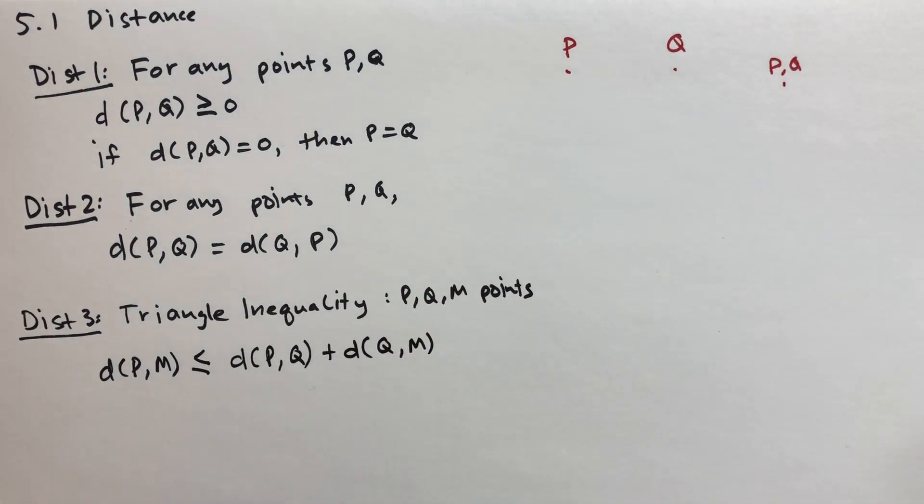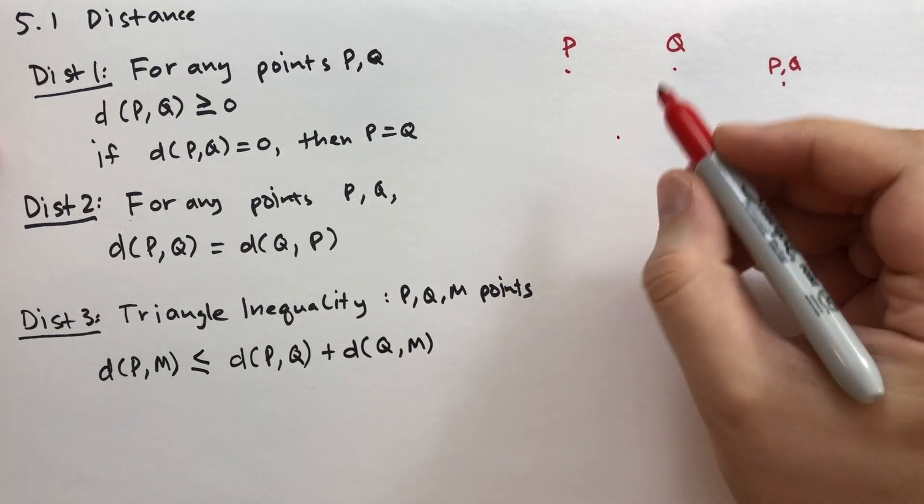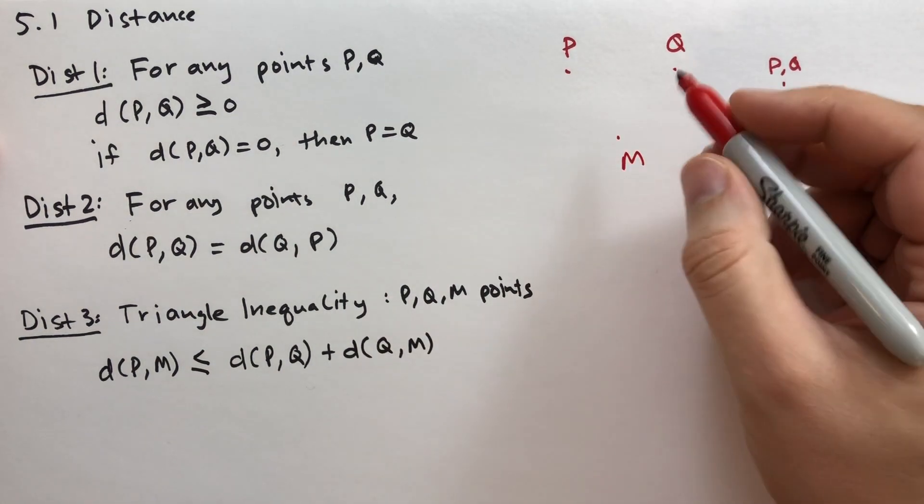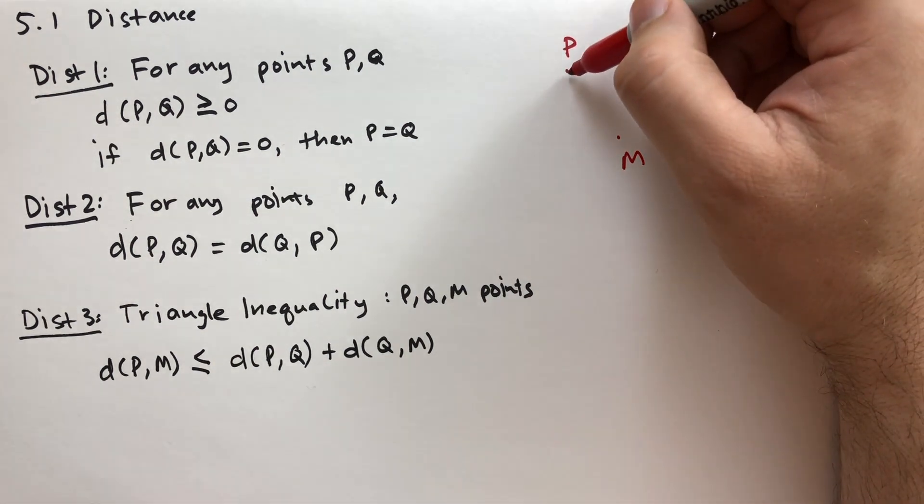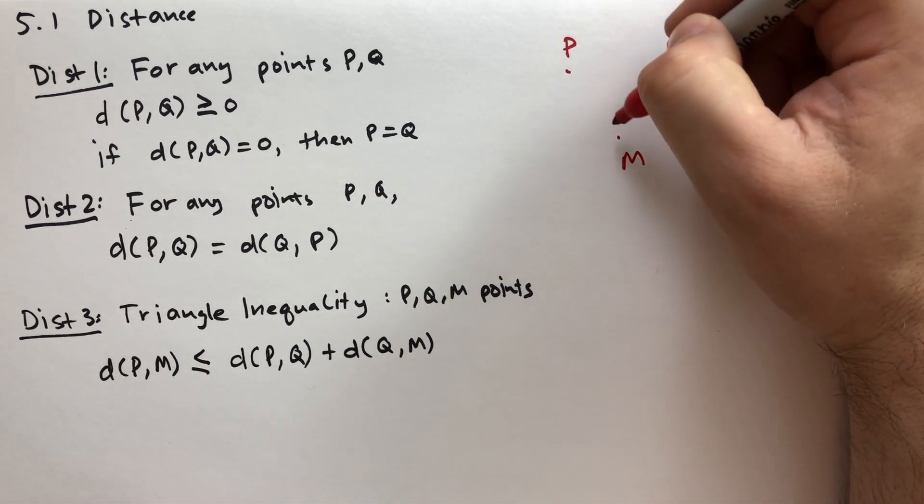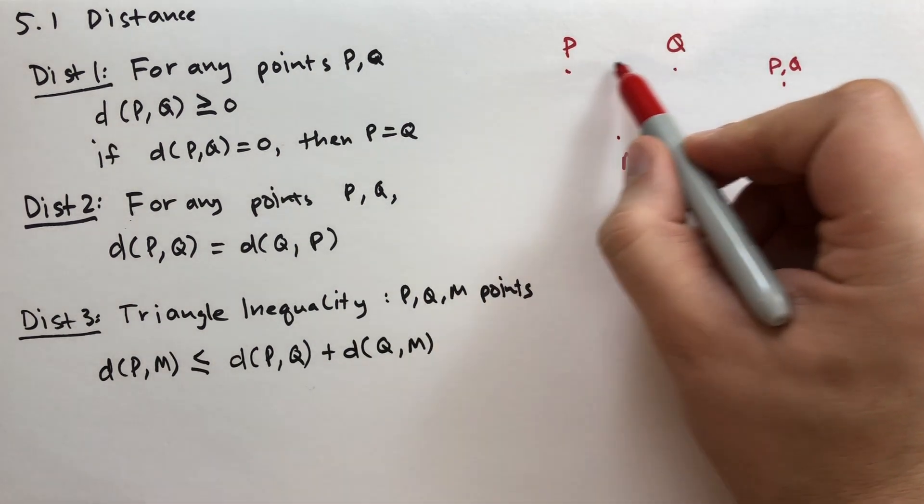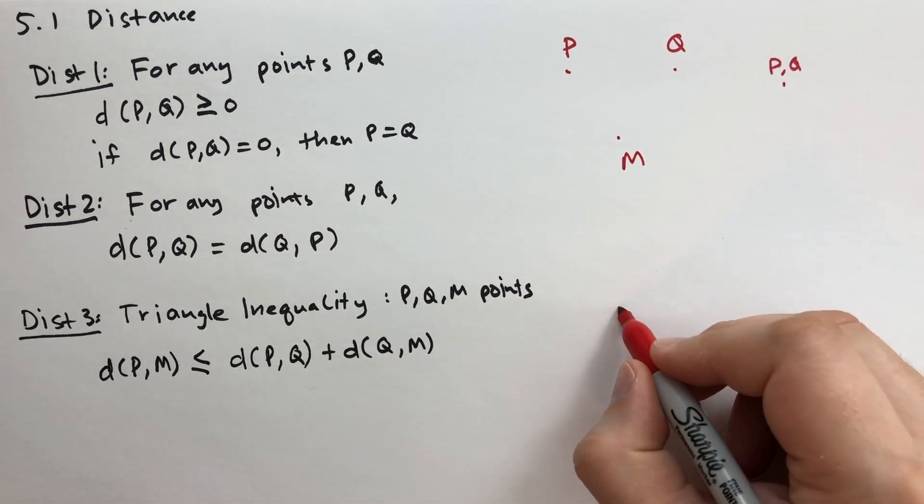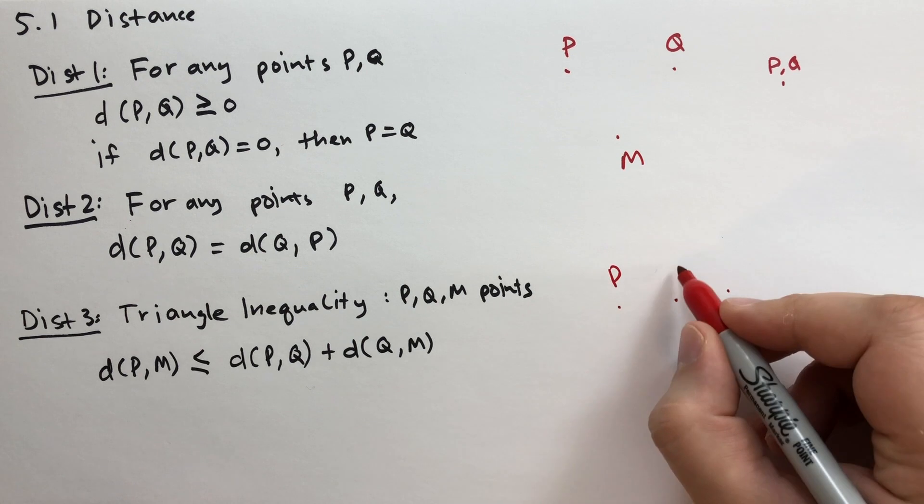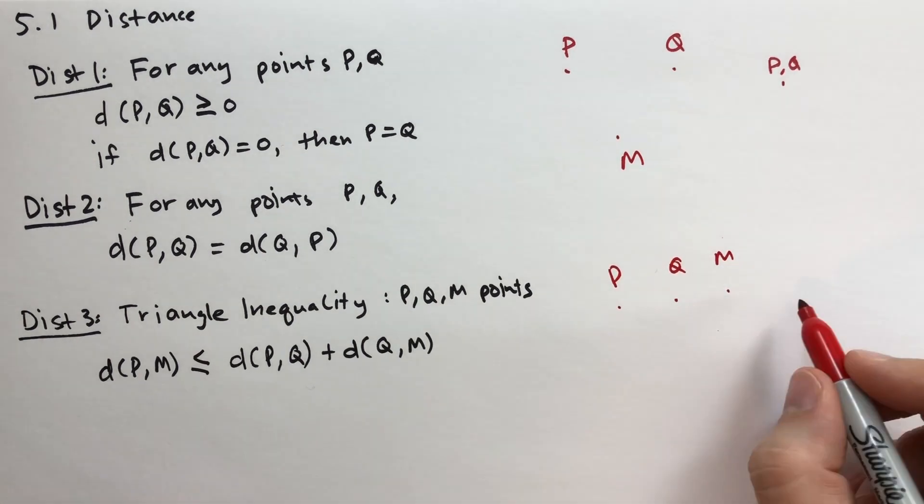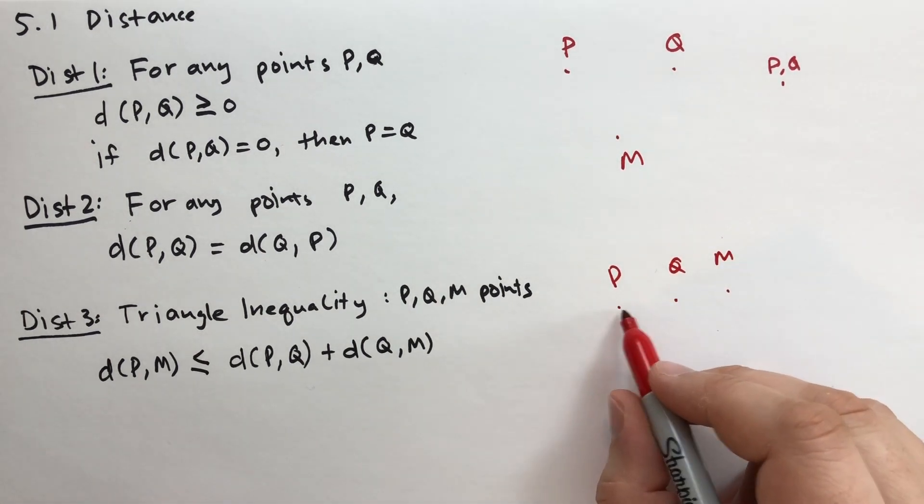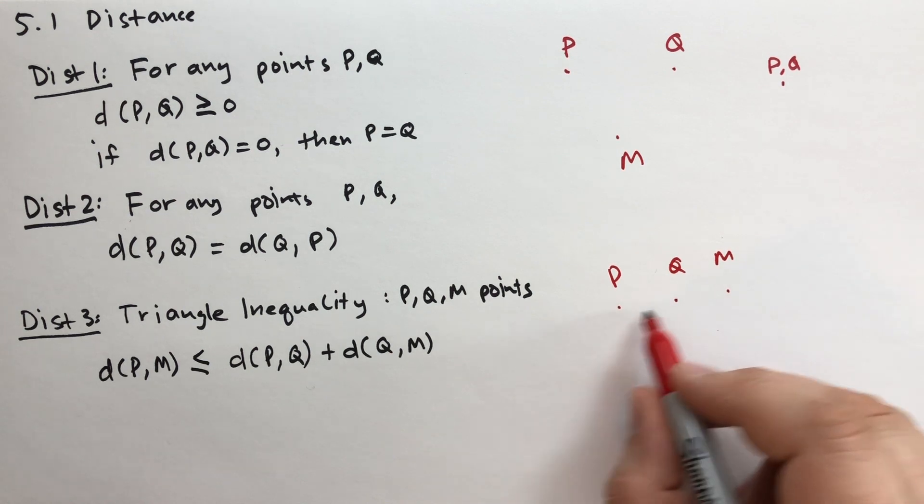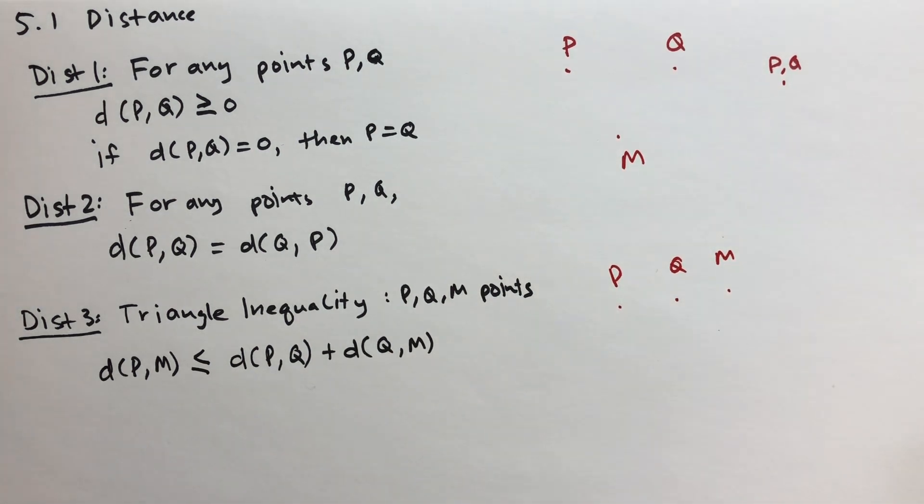And what this looks like is if we add another point here, M, then the distance from P to M is shorter than going from P to Q and then Q to M. That's all it says. Unless, of course, you have P, Q and M in a line, in which case the distance from P to Q plus the distance from Q to M is exactly equal to the distance from P to M. And we'll talk about that now.